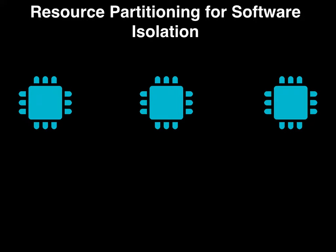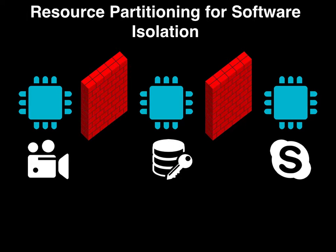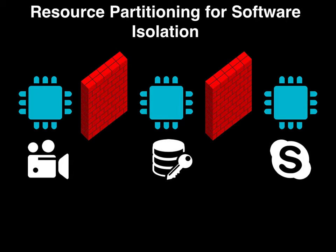A common technique to isolate software running on such platforms is to assign dedicated resources, such as memory and CPU, to each application. This technique is called resource partitioning and is widely believed to be a foolproof solution against information leakage and exfiltration.